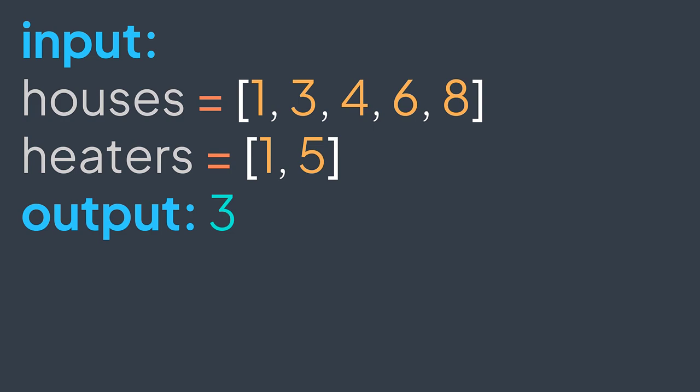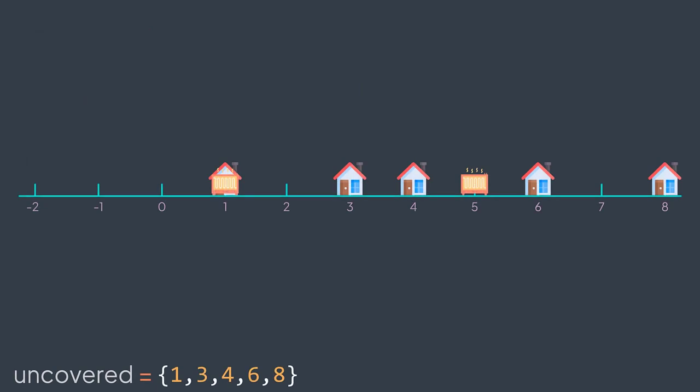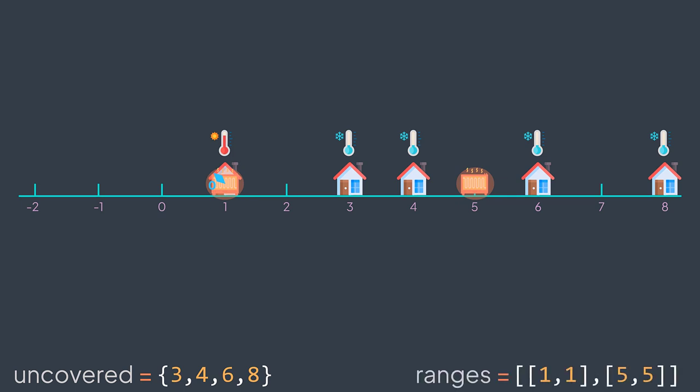How do we solve this problem? We can think of a brute force solution: we start with a radius of zero and keep increasing until all houses are covered. For that we need two structures — a set of uncovered houses, and an array that contains the boundaries of the range covered by each heater. In this example, uncovered initially contains one, three, four, six, eight. But we remove houses at positions where we have a heater — even with radius zero, house one gets removed. Our heaters are at positions one and five; we initialize their ranges at [1,1] and [5,5] respectively, because with radius zero they cover only their own position.